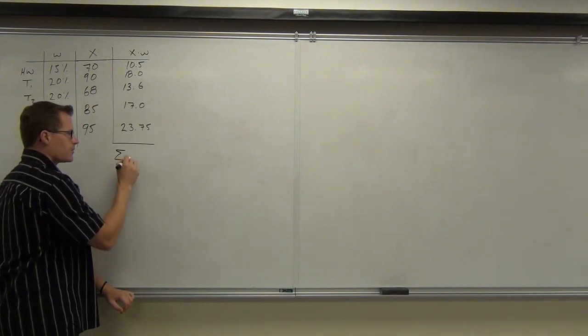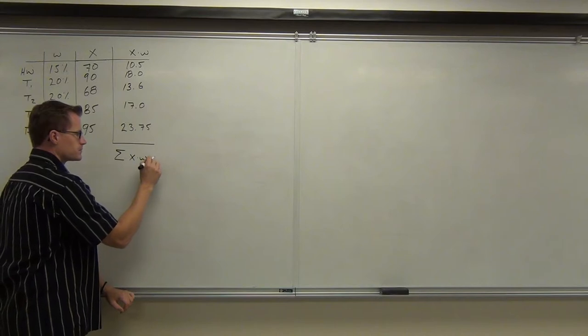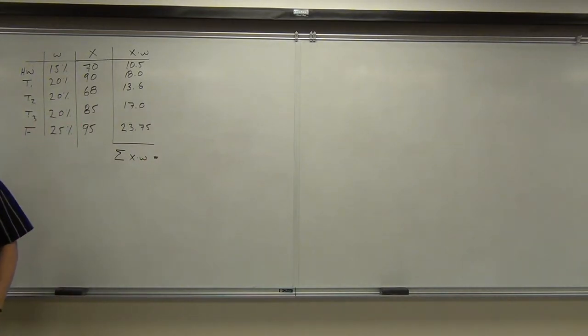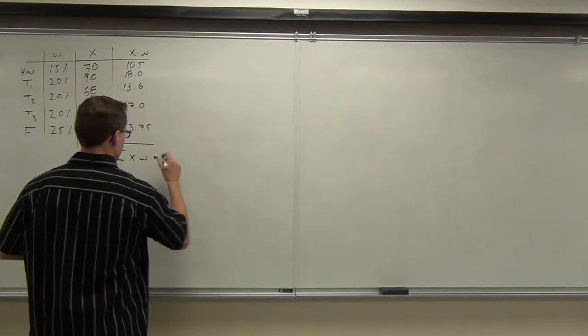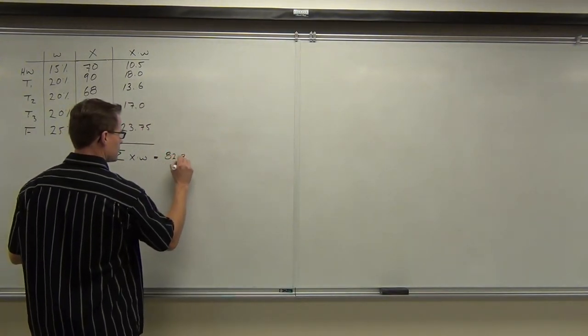Yeah, that one right there, our sigma. We're going to add up the xw's. Add up the xw's for me. Have you added all the xw's, x times w's? Did you get that yet? Add them all up, how much do you have? 82.85. Perfect.